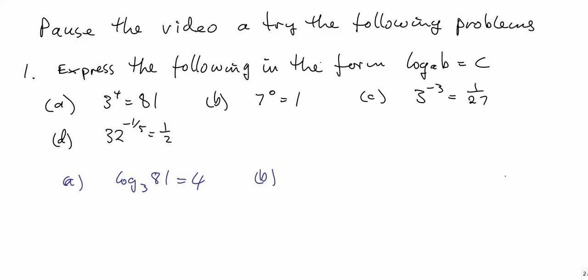7 to the power of 0 equals 1. The logarithm of 1 to base 7 equals 0.